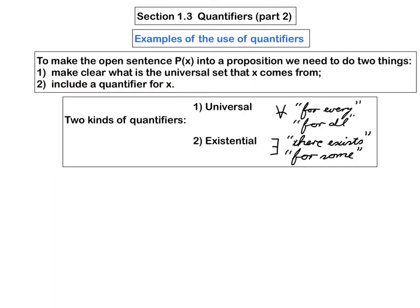Now, there are two kinds of quantifiers: the universal quantifier and the existential quantifier. The universal quantifier is denoted with this symbol, and in words you would say for every or for all. The existential quantifier is denoted with this symbol, and in words you would say there exists or for some.